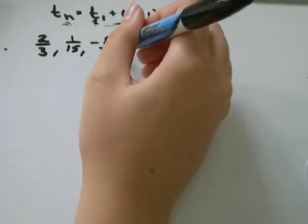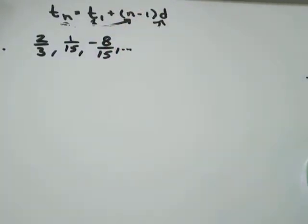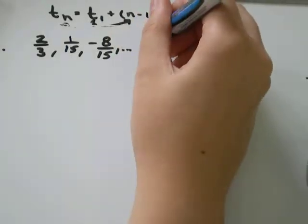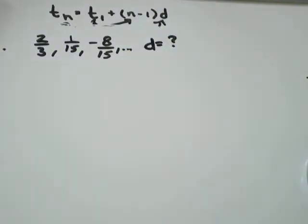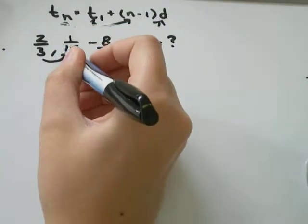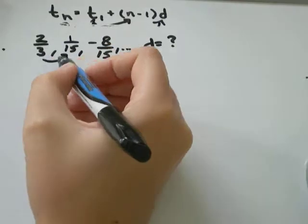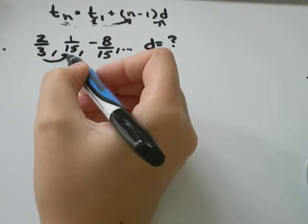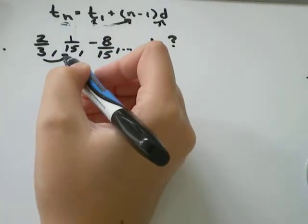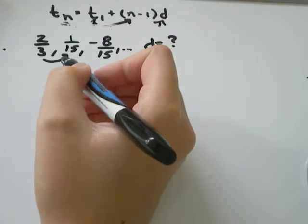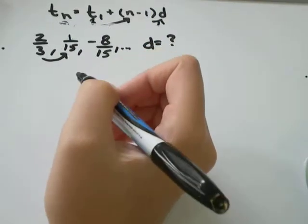And this is one of those sequences that goes on forever. So we're being asked to find the common difference. So d is what we don't know. d tells us what number do we add on to get from one term to the next. Sometimes you add on negative numbers, sometimes you add on positive numbers. We don't know yet, so we'll figure that out.